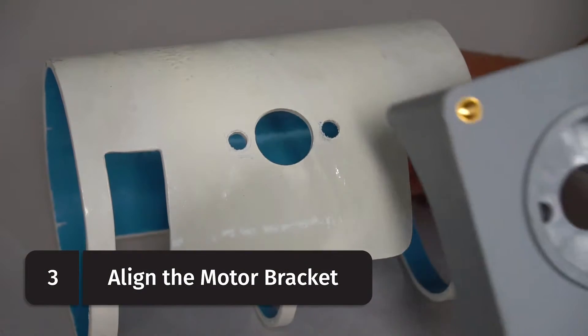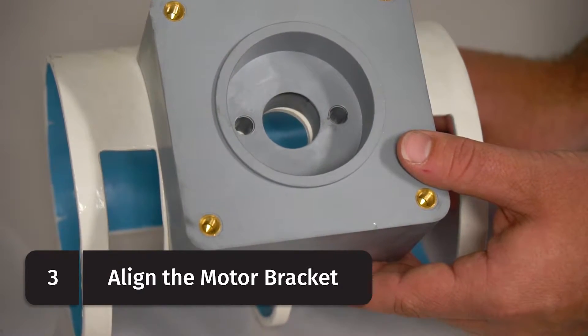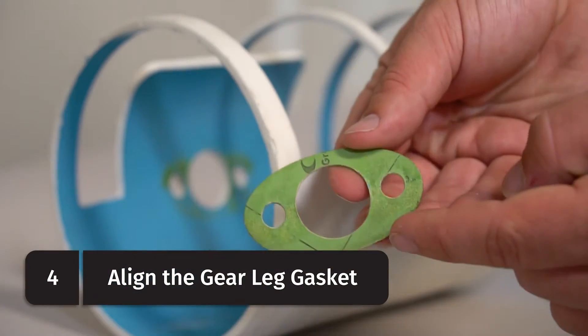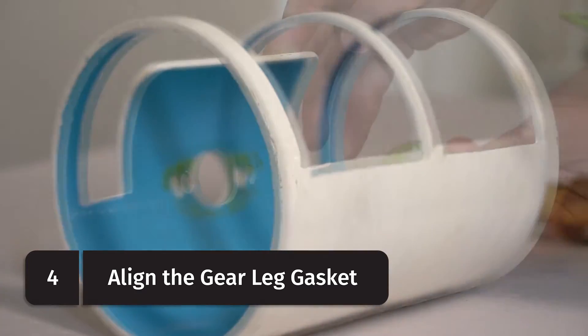Next you'll align the motor bracket with the drilled holes on the tunnel and insert the bolt plate for the gear leg to be bolted onto. Then you'll apply a marine grade sealant to both sides of the gear leg gasket and line it up with the shaft and bolt holes on the gear leg.